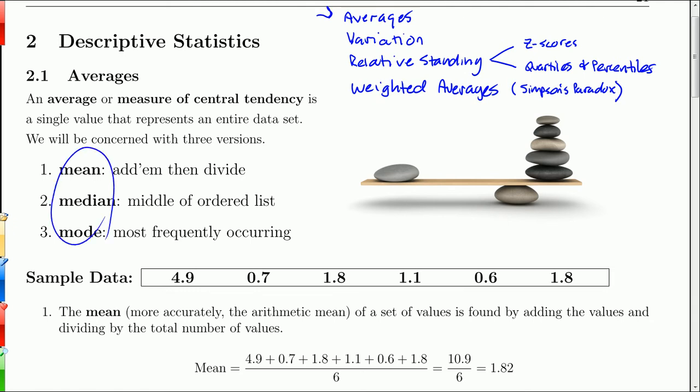But then we go one step further, and we try to describe how the data varies. And basically, we can do the variation with respect to the standard deviation, something called the variance. And then we also have the range, which is just the largest minus the smallest.